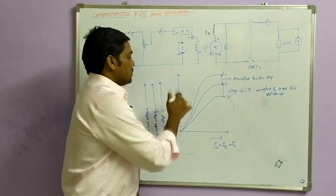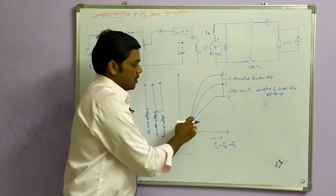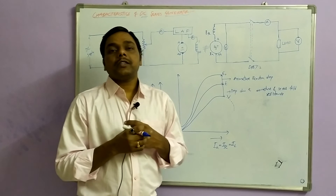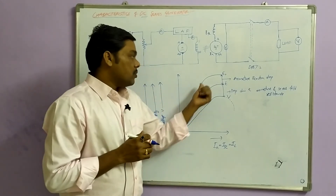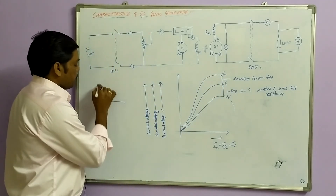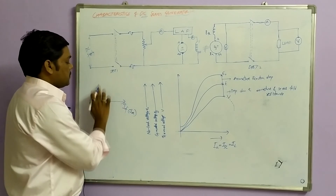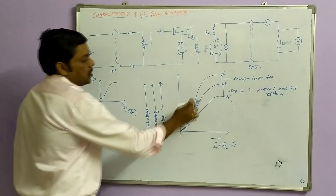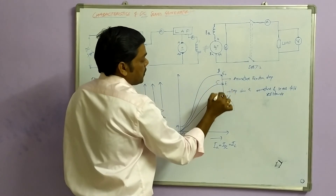Now if you draw the no load EMF E0 versus ISE, the curve will be like this. The procedure is: run the DC generator at rated speed and slowly increase the field current so that the generated EMF also increases. You can observe that ISE is the field current, E0 is the no load EMF, and the curve is obtained — we can label it as O, A, B, C, and D.